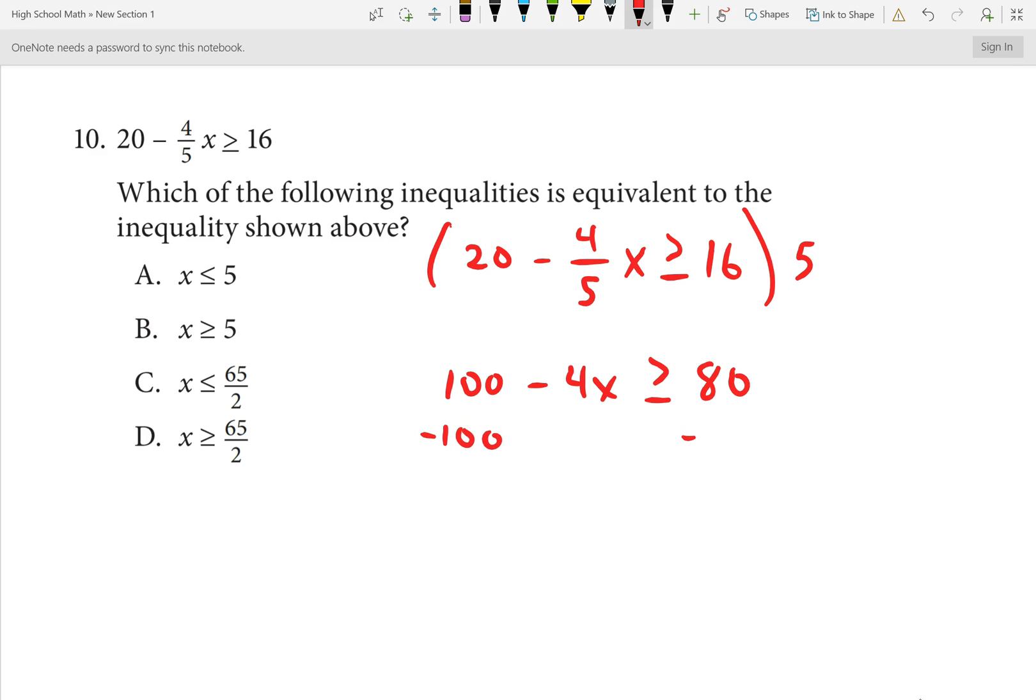Subtracting 100 on both sides leaves minus 4X is greater than or equal to minus 20. Then dividing by my coefficient, negative 4. X, remember to switch the direction of the inequality when you divide by negative. Minus 20 divided by minus 4 would be a positive 5. X is less than or equal to 5. Number 10 is A.